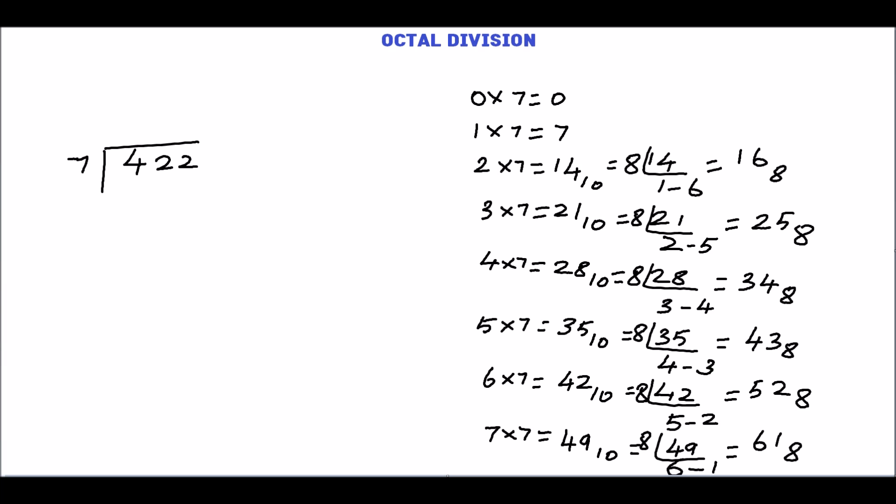Now we will divide 422 by 7. 4 is smaller than 7, so take 42.